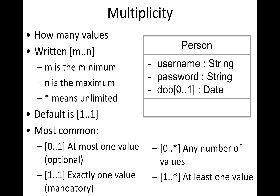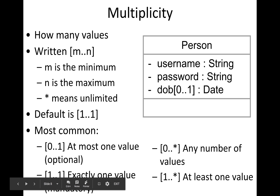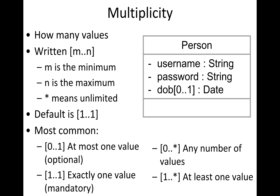If you don't give me the value for the attribute date of birth, that's fine — I'll allow you to insert and create a person without it. But username and password, notice the default is one-to-one, meaning they're mandatory. You have to give me at least a username and a password.